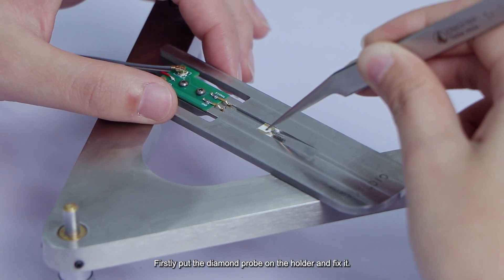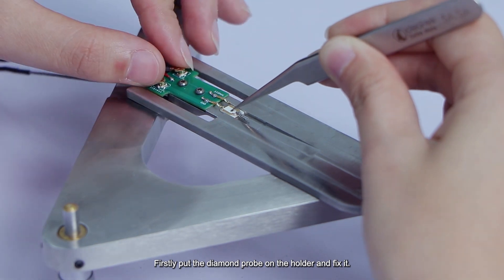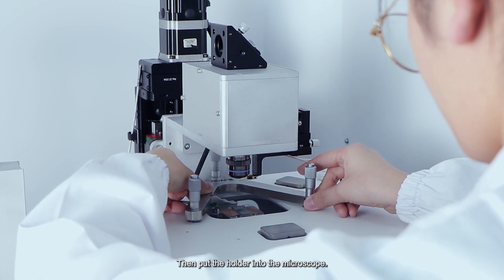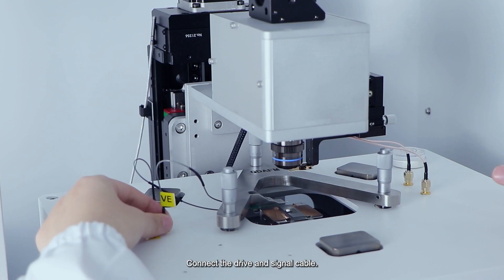Firstly, put the diamond probe on the holder and fix it. Then put the holder into the microscope. Connect the drive and signal cable.